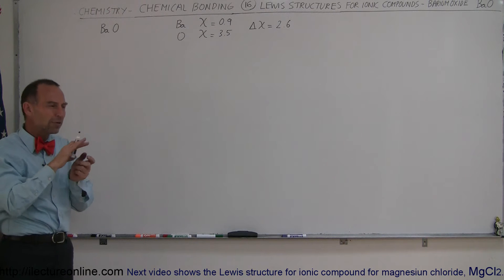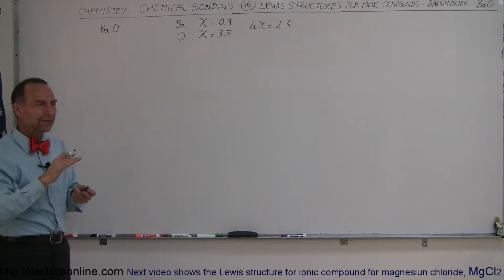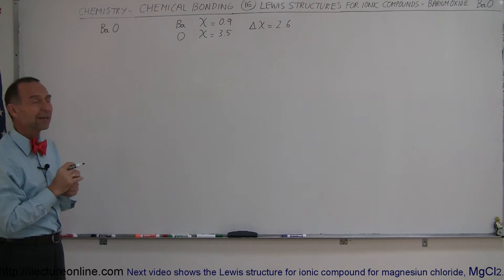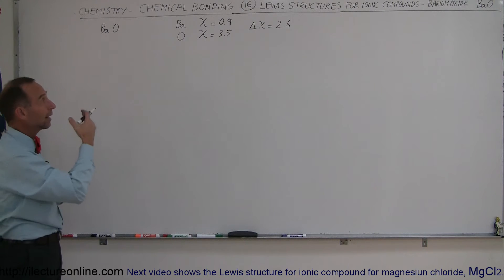Now the boundary where we say 2.0, you have to take with a grain of salt, because you can have a difference of 1.9 or 1.8 and that is still a fairly ionic compound, just less ionic than one that has a difference of 2.6.